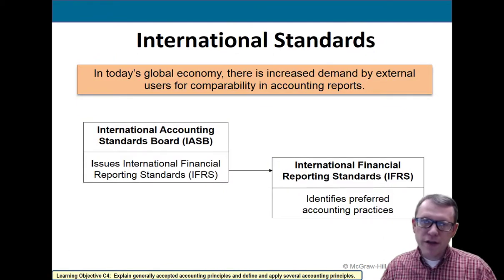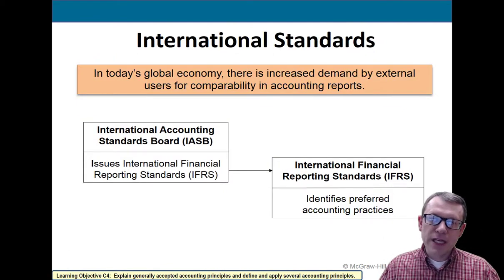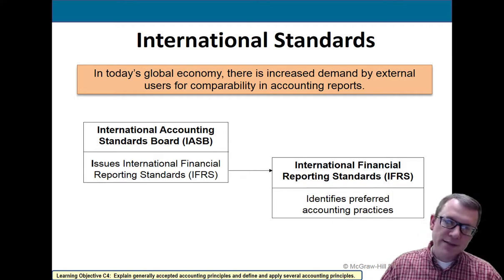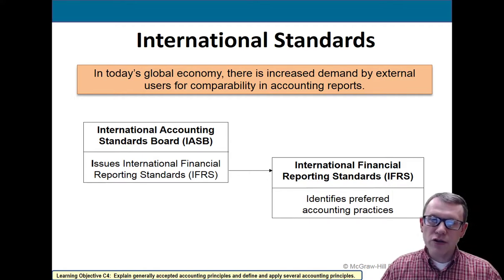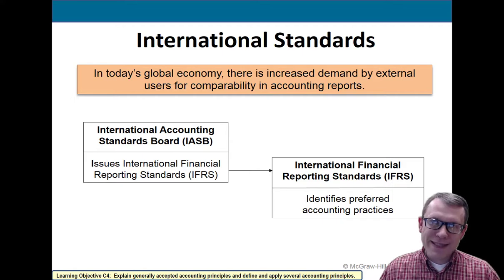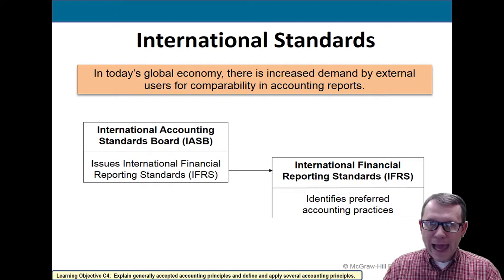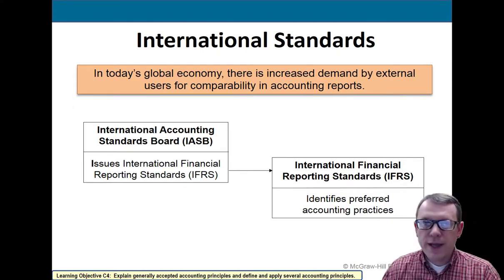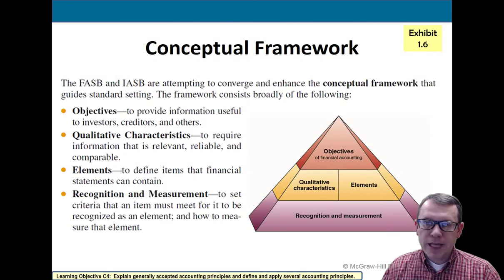There is also an international accounting standards board that has created IFRS — the International Financial Reporting Standards — which is the international equivalent of U.S. GAAP. Slowly but surely, U.S. GAAP and IFRS are becoming more and more similar because many U.S. companies are international and we live in a pretty global world.